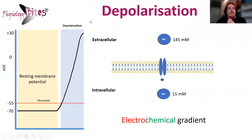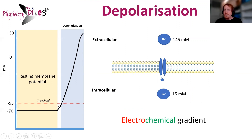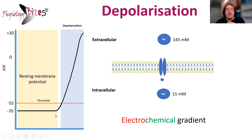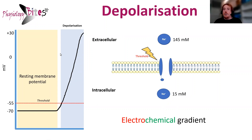So now let's talk about depolarization. Depolarization is when we get a positive influx of voltage inside the cell, so the cell becomes more positively charged. A number of stimuli will act as excitatory stimuli and bring the cell to what we call the threshold potential. The threshold potential is the point by which, if reached, depolarization will occur. It's what we call an all-or-nothing principle: either we reach threshold and depolarization occurs, or we don't and it doesn't. There's no in-between. The reason depolarization occurs is that at this threshold, voltage-gated sodium channels, shown here in blue, open.